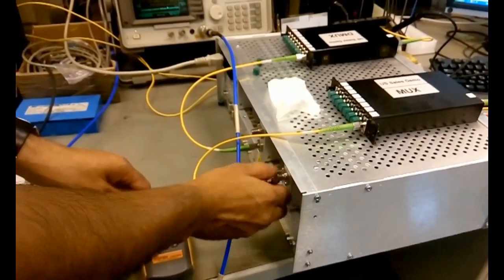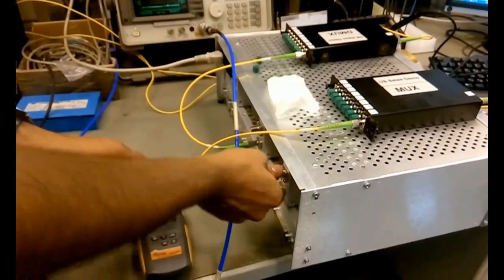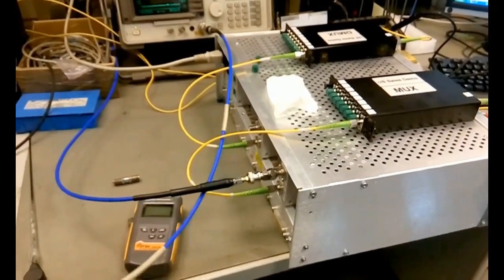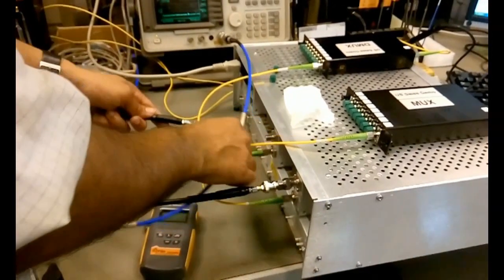Now we're ready to connect the RF. Our signal will go to the transmitter and our spectrum analyzer will be connected to our receiver.